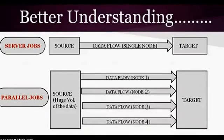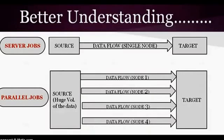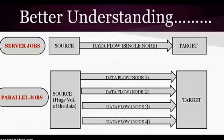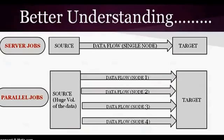In parallel jobs, we need to handle huge volumes of data — sometimes 10 million records, sometimes 40 million records, depending on daily volume. Parallel jobs have multiple nodes; for example, four nodes. Data from the source flows to the target through these four nodes. Based on partitioning techniques, data is distributed across nodes — each node processes its portion — and then all results come to the target.